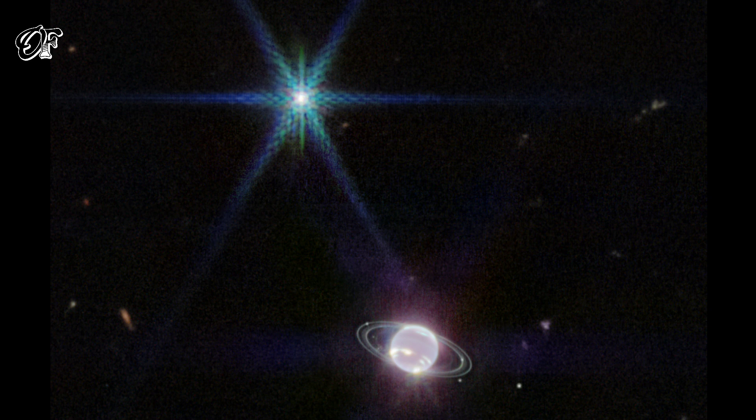Coated with frozen nitrogen, Neptune's largest moon Triton is brighter than Neptune in reflected sunlight and is seen at upper left sporting the Webb's characteristic diffraction spikes. Including Triton, seven of Neptune's 14 known moons can be identified in the field of view.